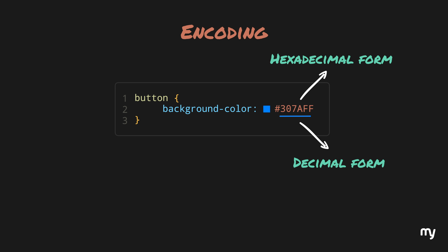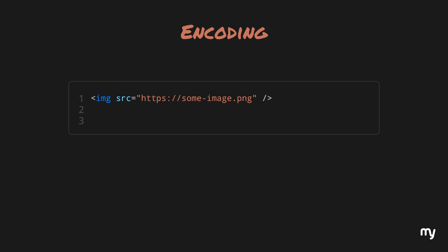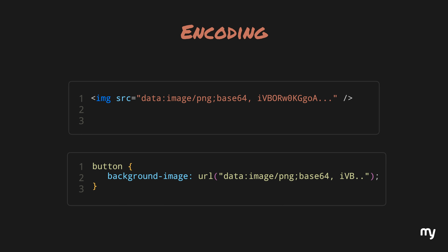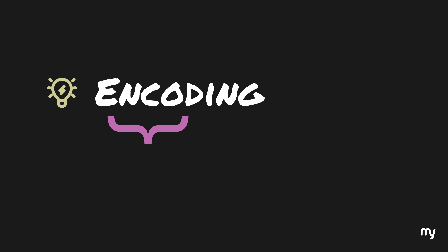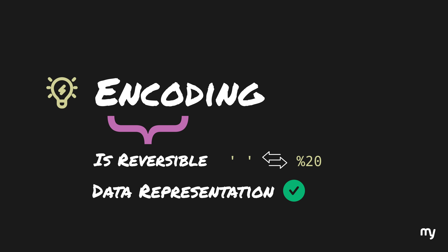In decimal, the same value would look like this. Similarly, in HTML, you may have seen the image tag to add images to your page, which refers to the URL where the image resides. While this is fine for large images, the lighter images can be directly embedded in base64 format via HTML or CSS to save a network call. The key point to understand here is that encoding is reversible. Anyone who sees %20 can decode it back to a space. It's about data representation, not security.